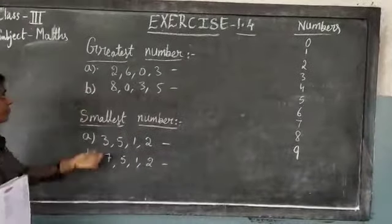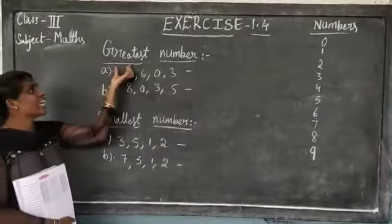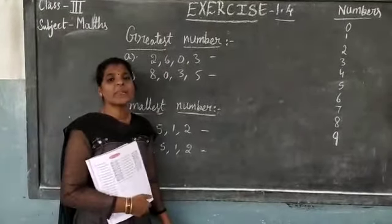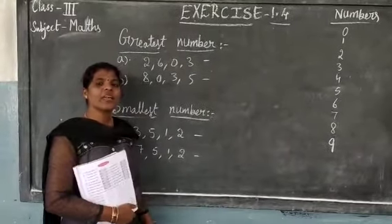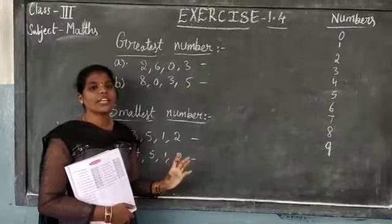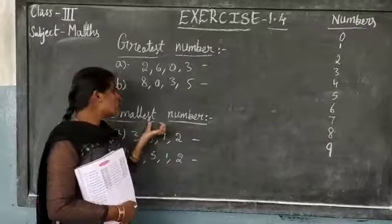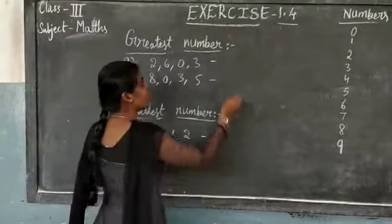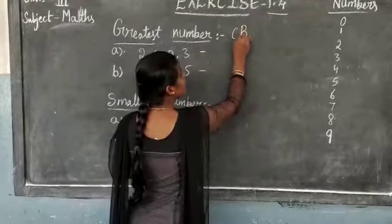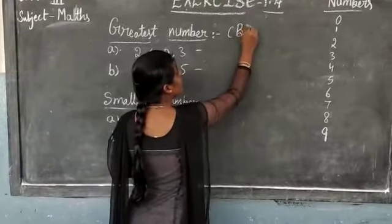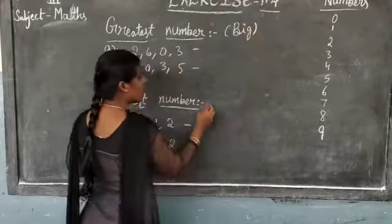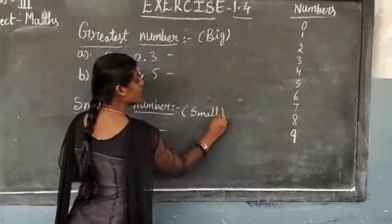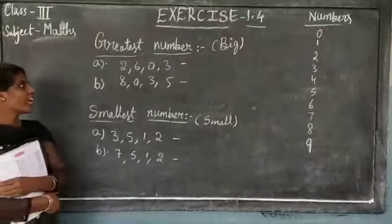Ok, see here. Greatest number — greatest number means what is the greatest number, children? Greatest number means big number. Smallest number — smallest number means small number. Greatest number means big, big number. Smallest number means small number. Ok children, did you understand?